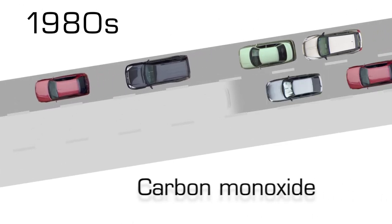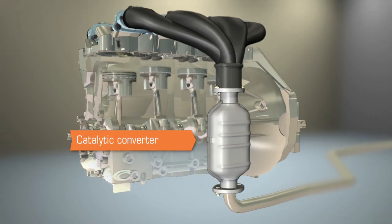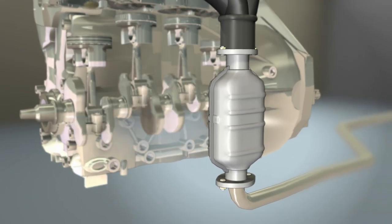Governments set stringent limits on emissions, with specific requirements for unburned fuel, carbon monoxide, and nitrous oxide emissions. These restrictions initiated the use of the catalytic converter, which is still used today to clean tailpipe emissions.